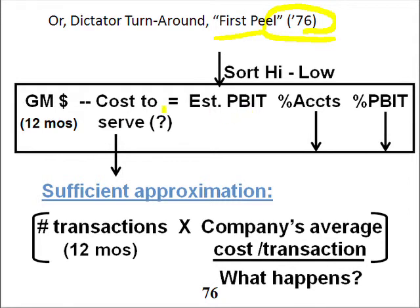I intuitively realized that — I drove around with a truck driver, watched him deliver tiny little orders to little companies. We had too many small customers and small orders, and everybody was very busy with phones and paperwork and trucks and so forth, but there was no margin dollar payload per pick, per order, per stop of the truck.